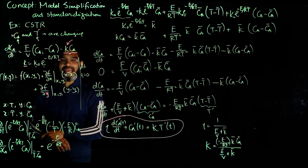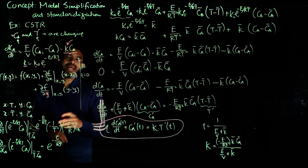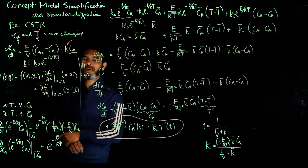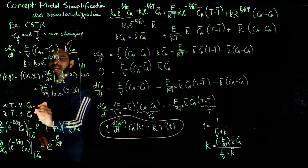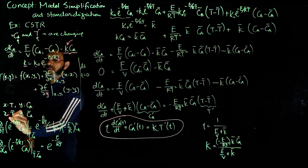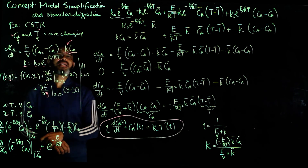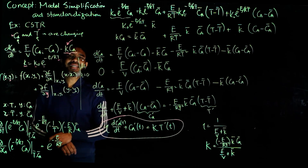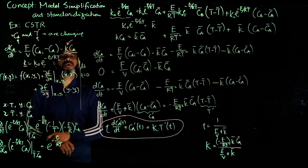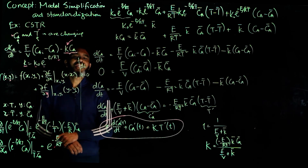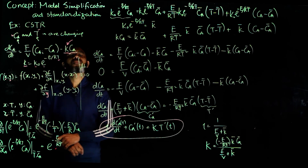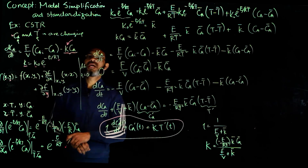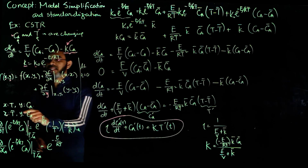For our case, let's assume X equals T (temperature) and Y is CA, the concentration of reactant A. For the particular case we looked at — the ethylene oxide plus water reaction — A is the composition of the reactant. So X-naught is T-bar, the initial steady-state value of temperature, and Y-naught is CA-bar, the initial steady-state value of concentration.